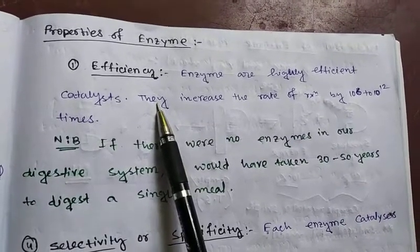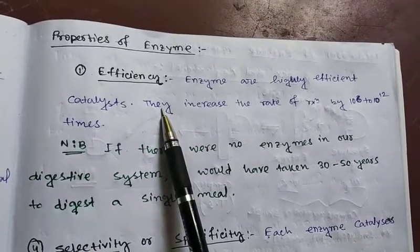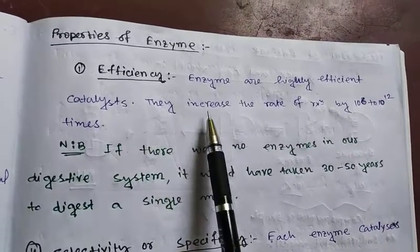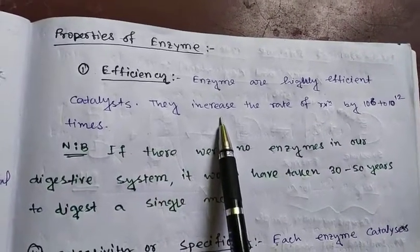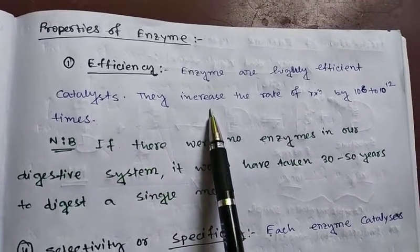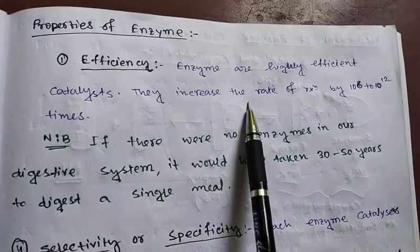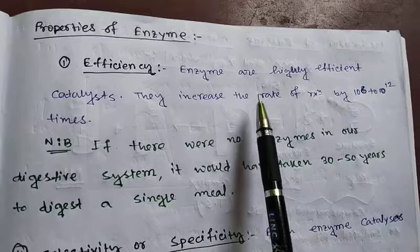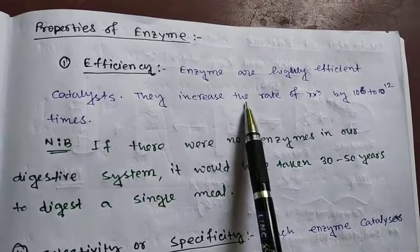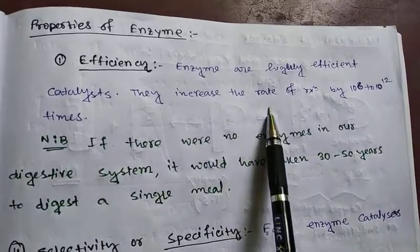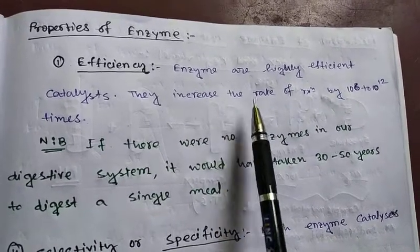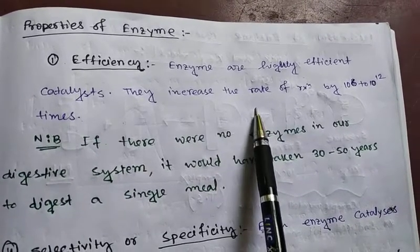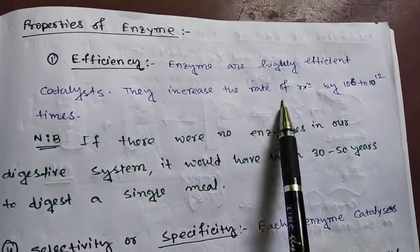Efficiency: enzymes are highly efficient catalysts. They increase the rate of reaction by 10 to the power of 6 to 10 to the power of 12 times.